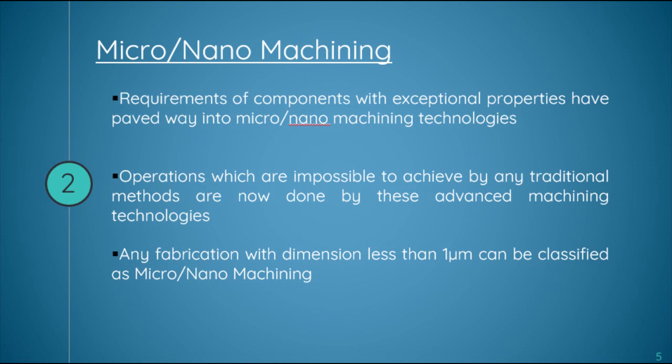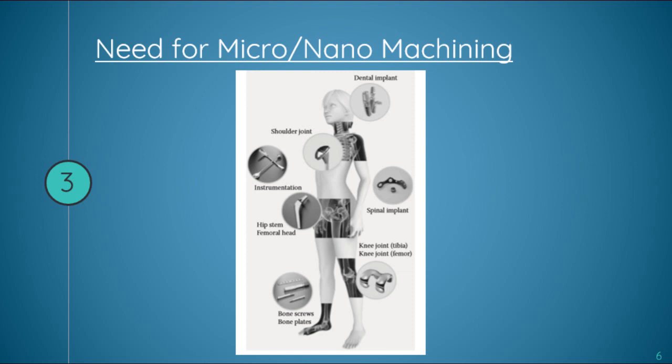Now let us answer the question: why is nano or micro finishing process required? Taking the human body as an example, many advanced finishing processes would be required to finish human implants that are placed inside our body after surgery. These implants should be manufactured without any surface and subsurface defects. Examples include dental implants, hip stems, shoulder joints, knee joints, bone screws, and other implants which require nano or micro finishing processes.